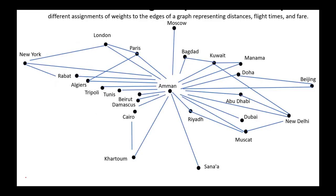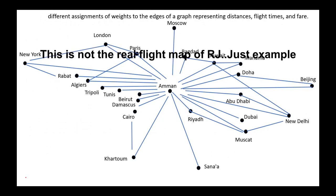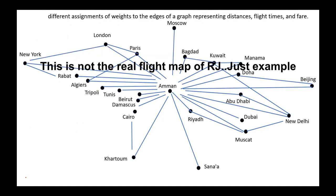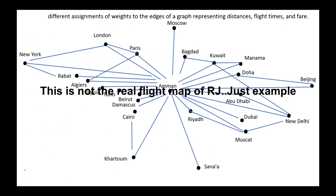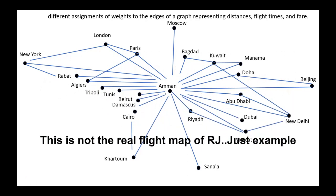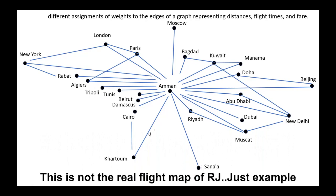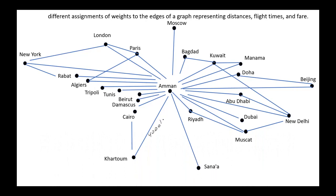Consider, for example, the flight map for Jordanian Airlines. If our problem involves distances, then we can assign distances between cities to the edges. For example, Amman–Khartoum 4,000 km, Amman–Cairo 2,200 km, Amman–New Delhi 6,000 km, etc.